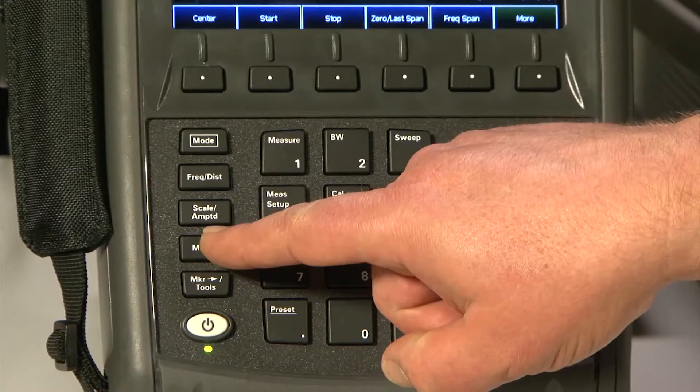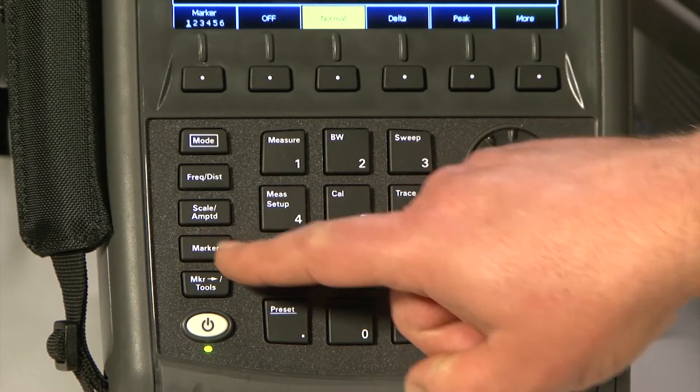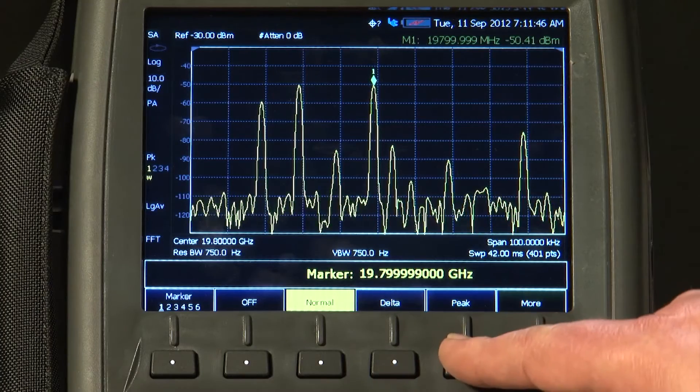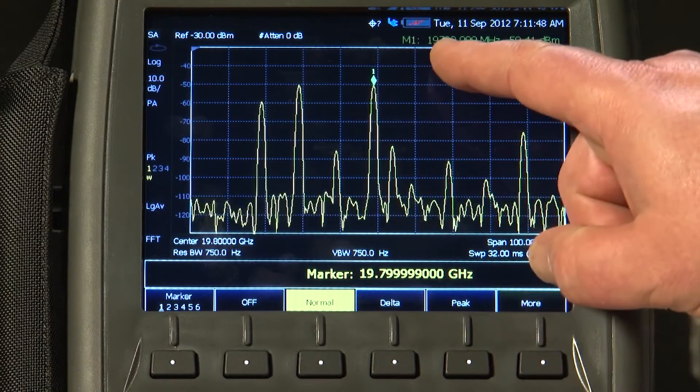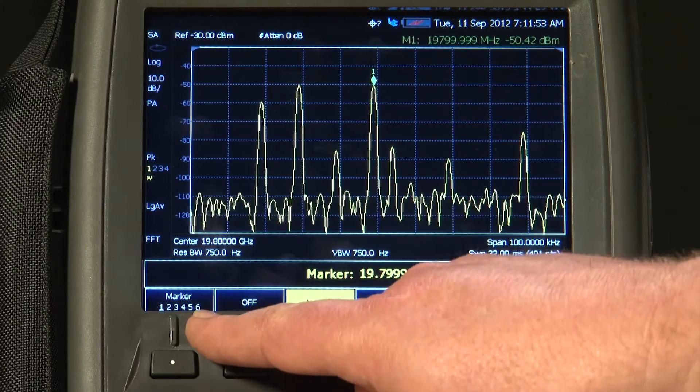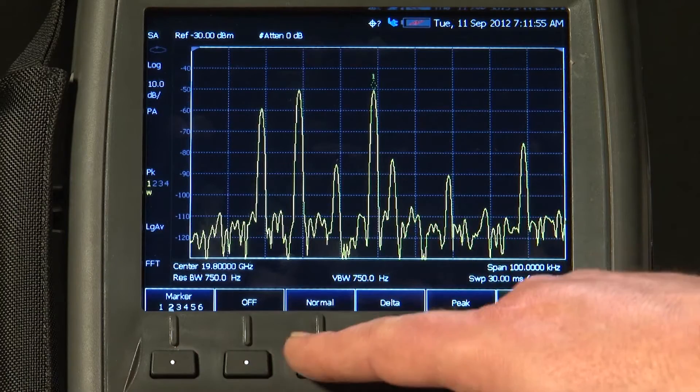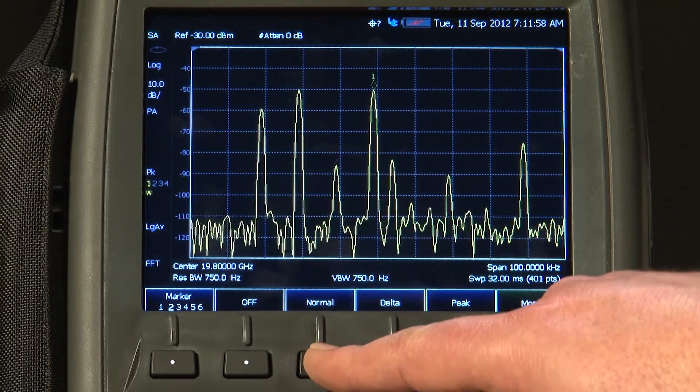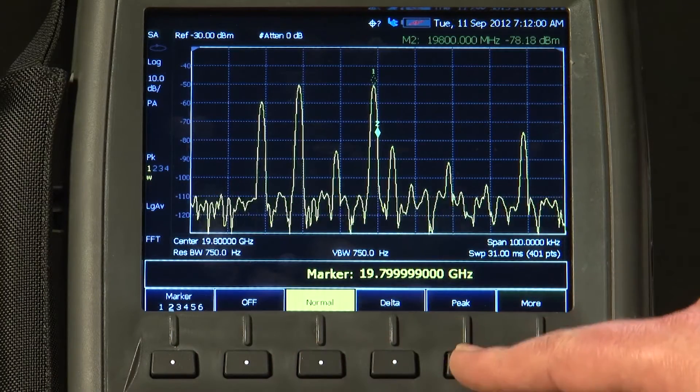We can turn on the markers, so I can press the peak button. Marker 1 has gone to the largest carrier on the display. We have 6 markers we can turn on. Marker 2, for example, I will set that to normal and put it to peak.